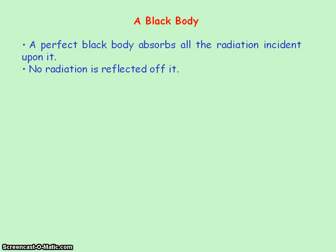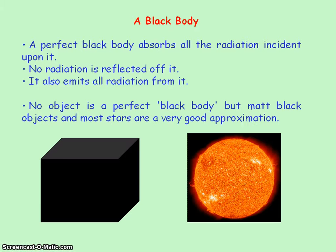No radiation is reflected from it, and it can also emit all the radiation from it. So there's not actually a perfect black body, but matte black objects or most stars can be taken as a very good approximation of a black body.